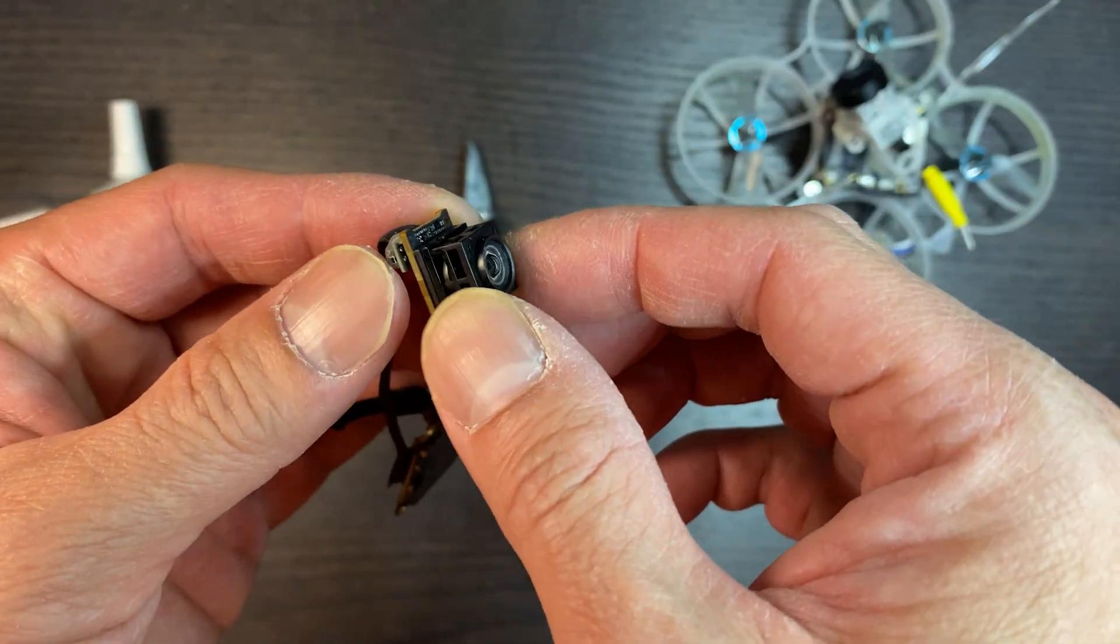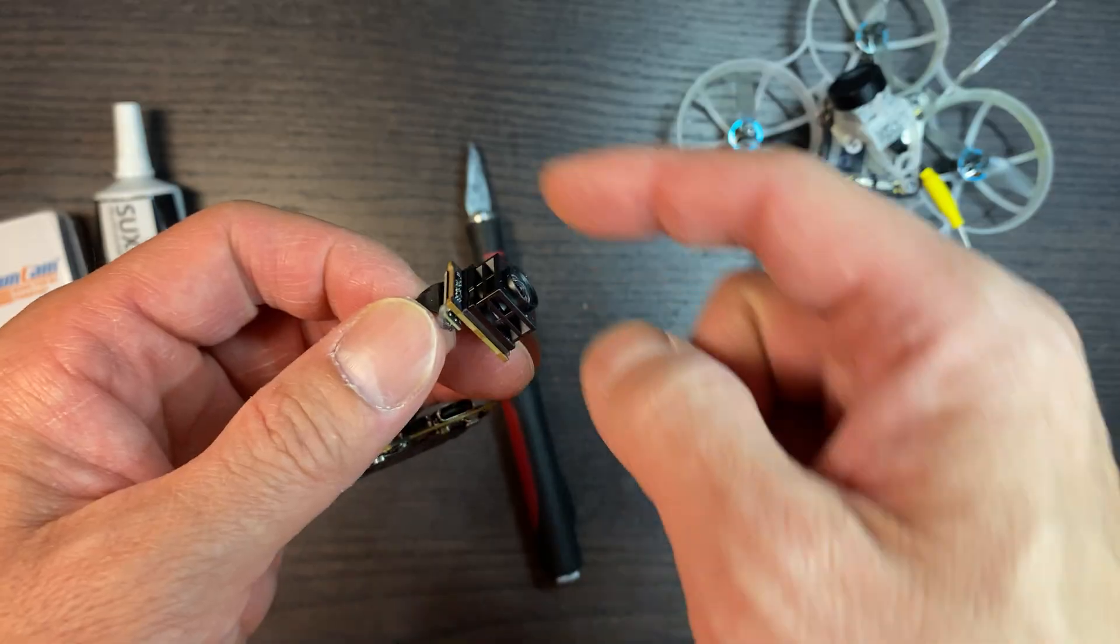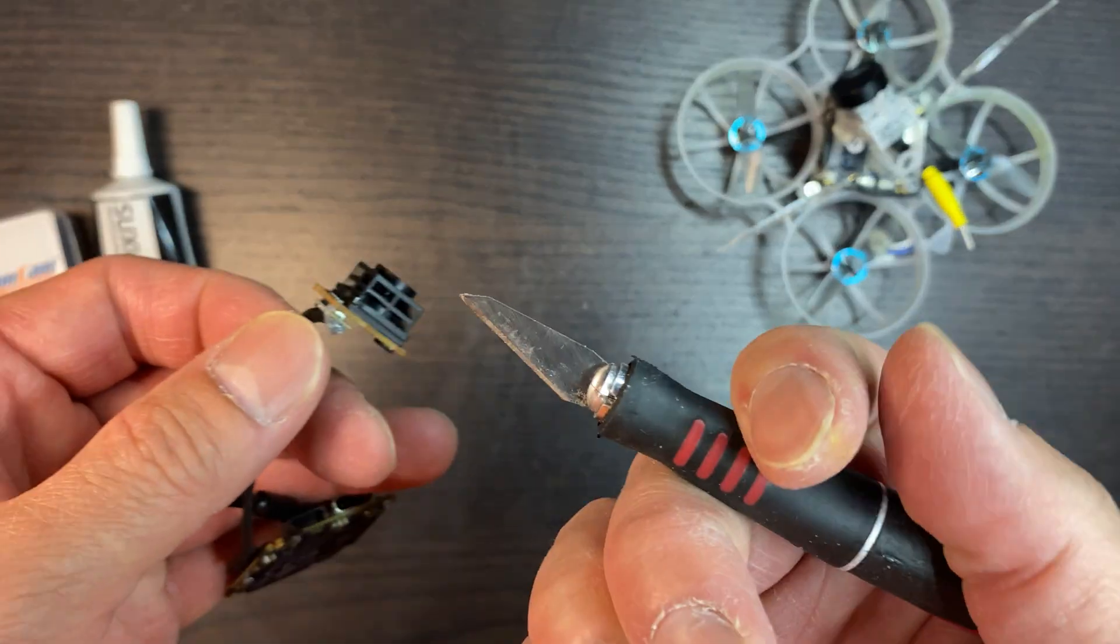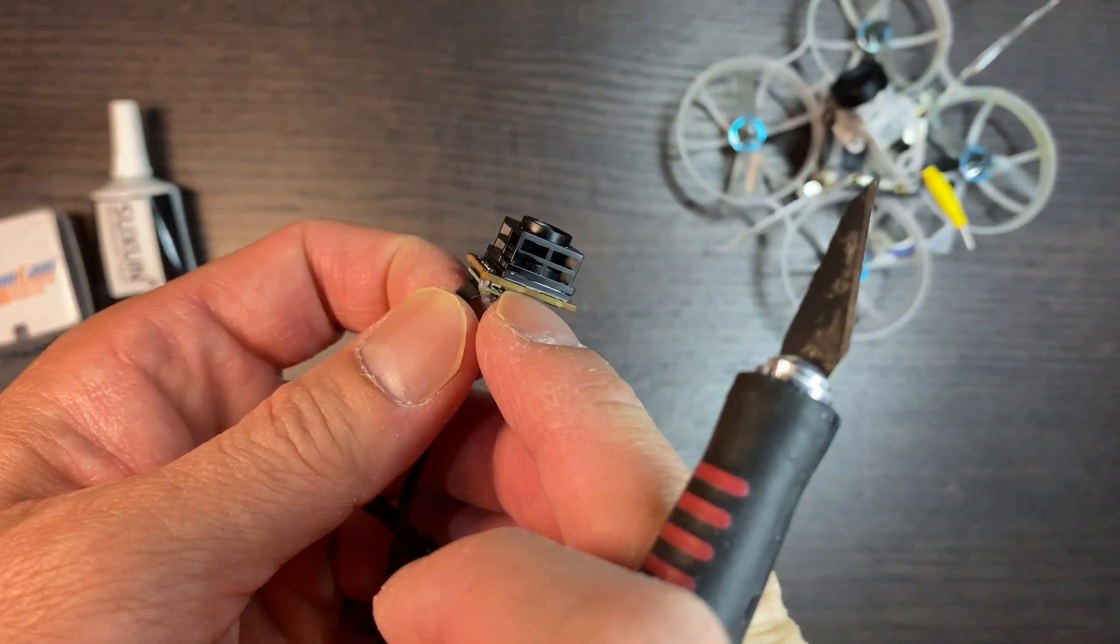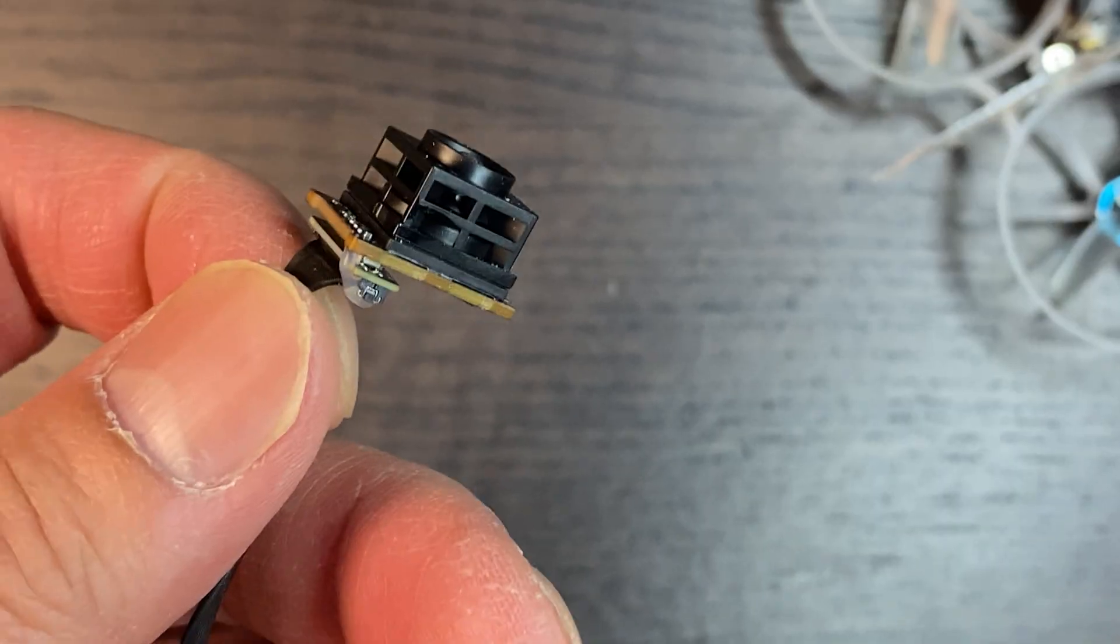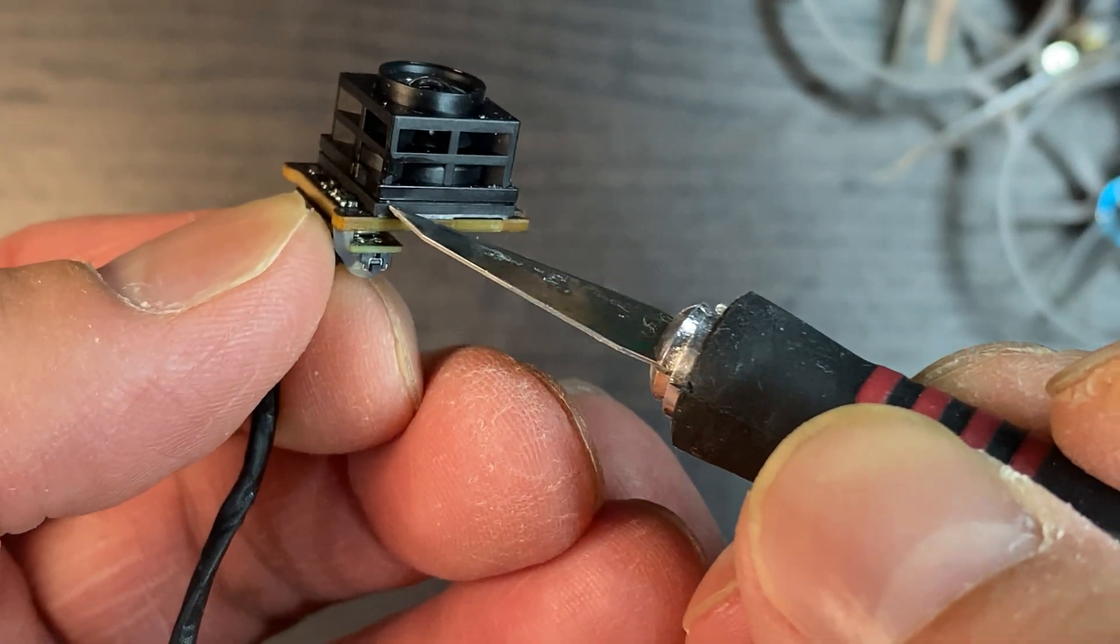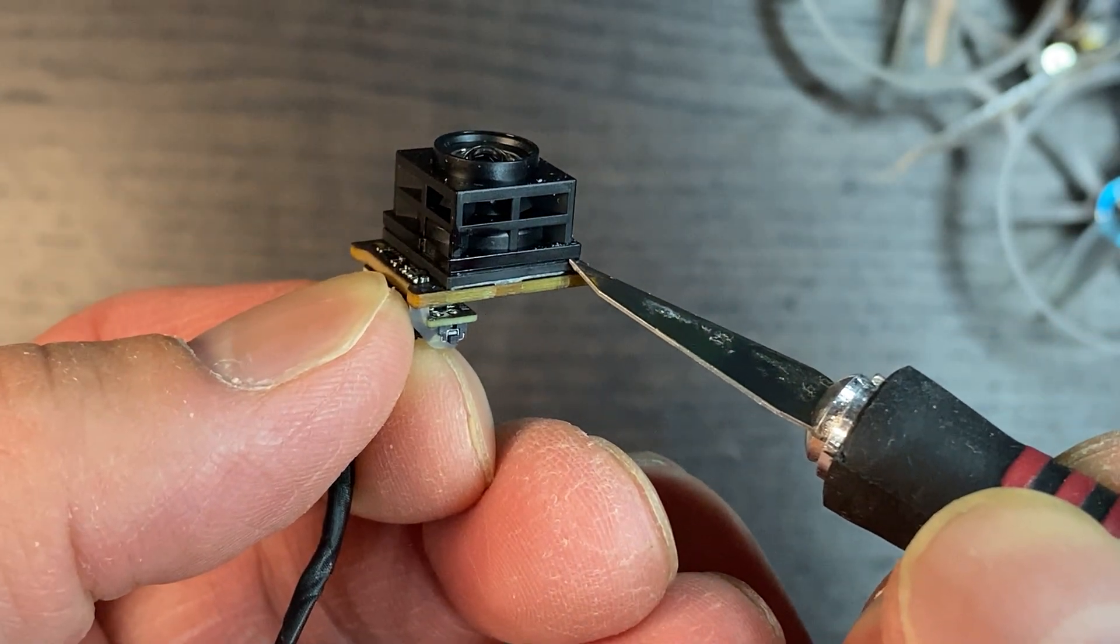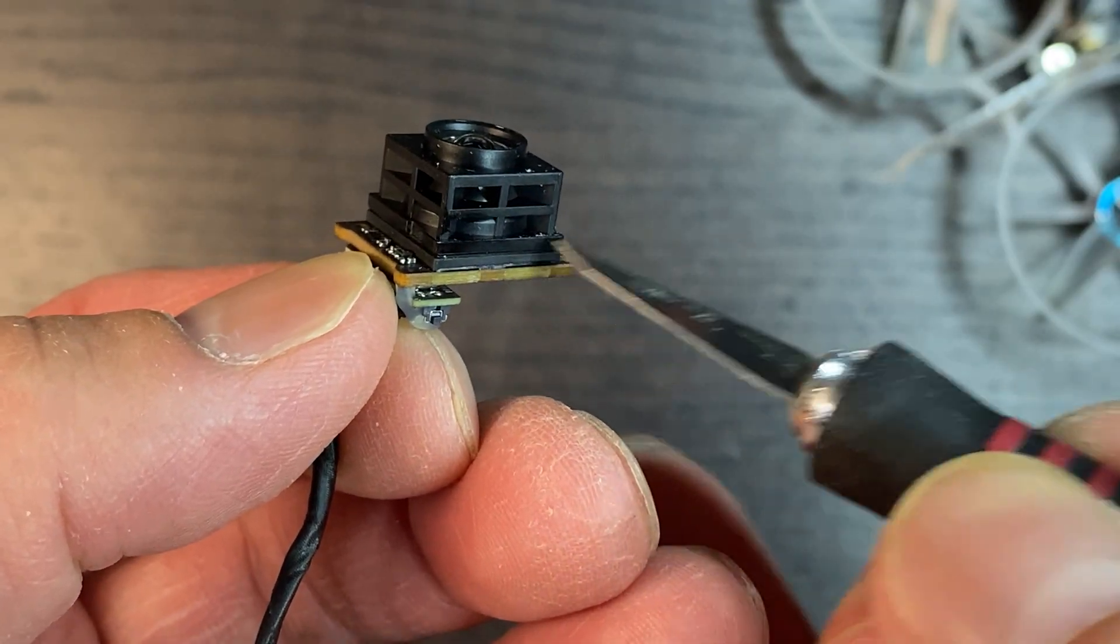So take the heat gun or reflow station and heat around here and you want to use an exacto knife after heating it to graze the edge here. Let me see if I can zoom it in. So right here, that is what you need to run your exacto knife or hobby knife through.